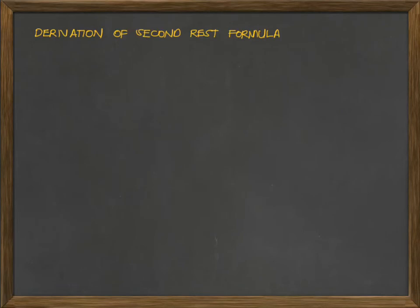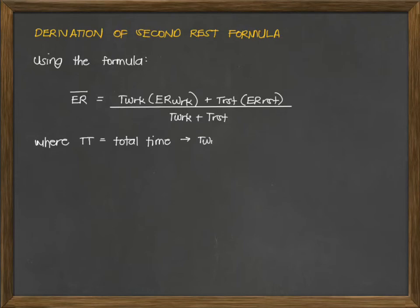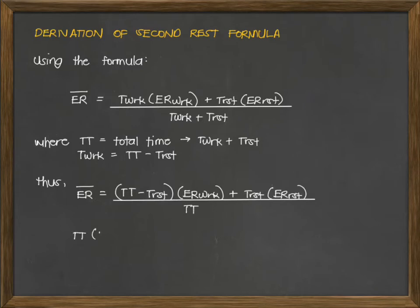Here is the derivation of the second rest formula. Using the ER bar formula: T work times ER work plus T rest times ER rest, all over T work plus T rest. We designate total time T_T as T work plus T rest, so T work equals total time minus T rest. Thus, ER bar equals (total time minus T rest) times ER work plus T rest times ER rest, all over total time.